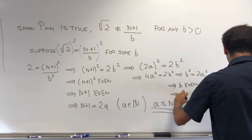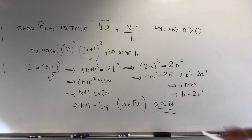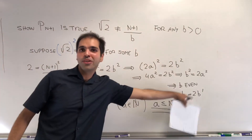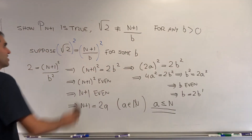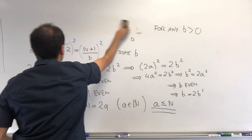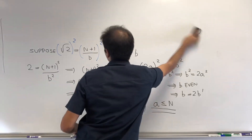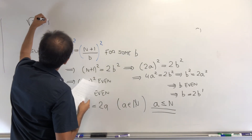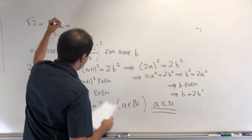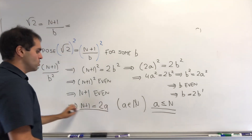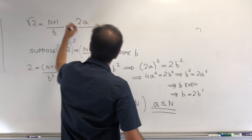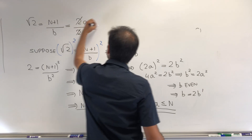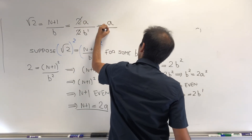So b equals 2b' for some integer b'. Going back to square root of 2: that becomes (n+1) over b. But n+1 is 2a and b is 2b', and that gives you a over b'.